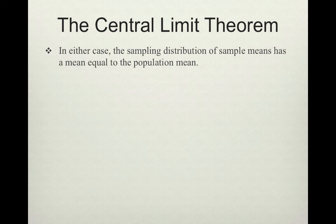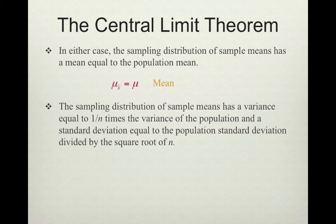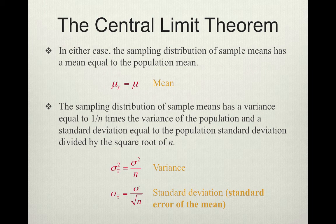In either case, the sampling distribution of sample means has a mean equal to the population mean — we saw that in the last lecture. The sampling distribution of sample means has a variance equal to 1 over n times the variance of the population, and a standard deviation equal to the population standard deviation divided by the square root of n. So if we want the variance, we take the population variance and divide it by n. If we want the standard deviation, or standard error of the mean, we take sigma and divide by the square root of n.